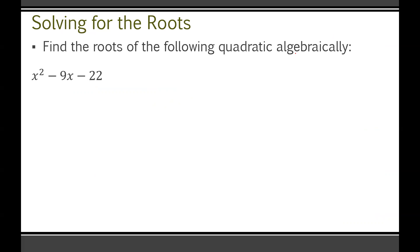Find the roots of the following quadratic algebraically — that means no graphing calculator, you have to figure this out by hand. You have total freedom on which method to use: factoring, vertex form, or the quadratic formula. The best method here, in my humble opinion, is to factor, because this is a standard sum-product rule question. Since we have an A value of 1, negative 9 represents our sum and negative 22 represents our product. The second best option is the quadratic formula — it works every time, just takes a little more time.